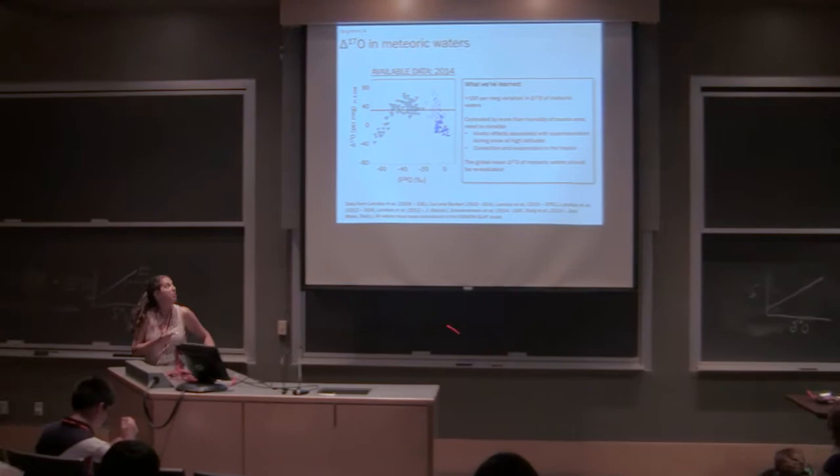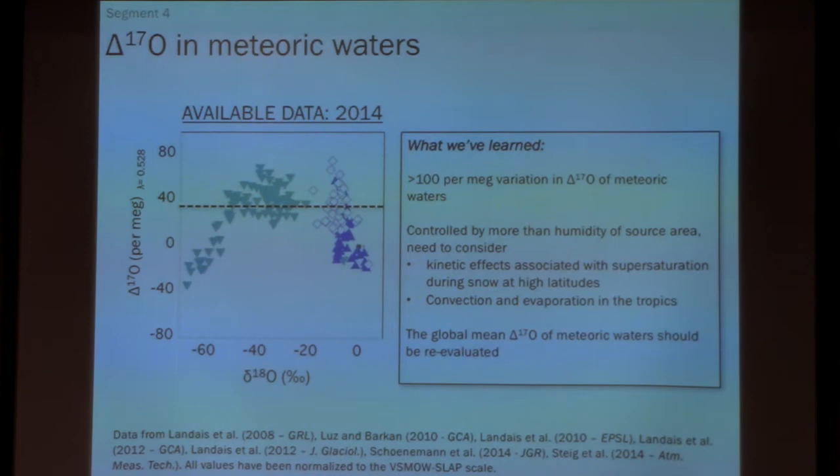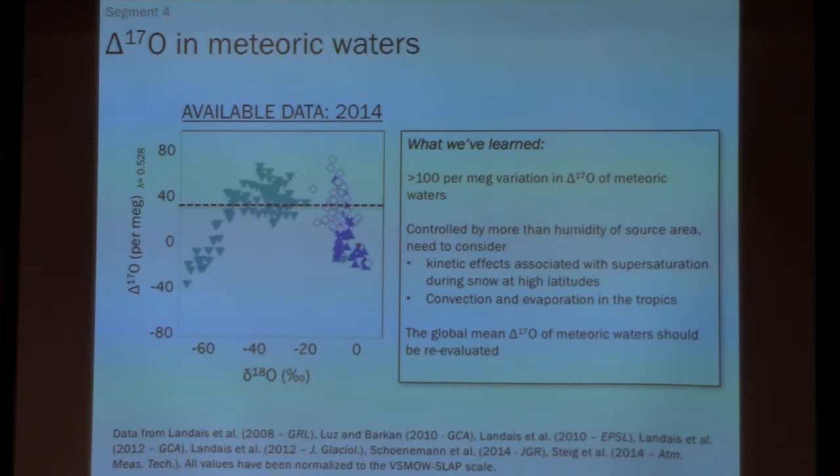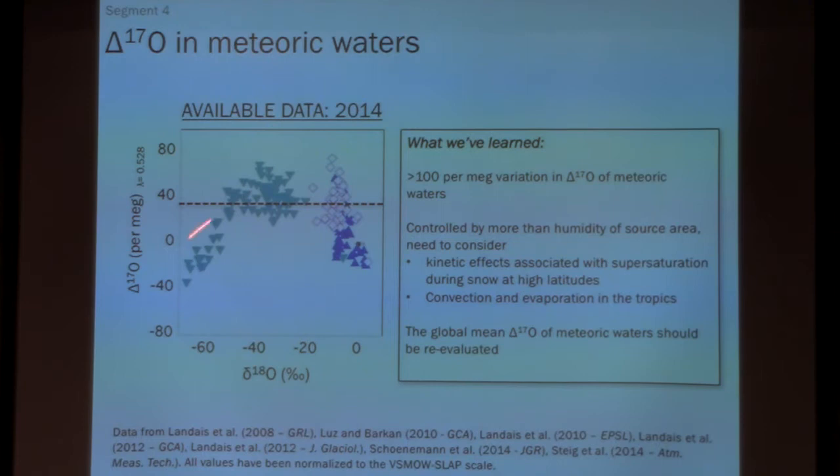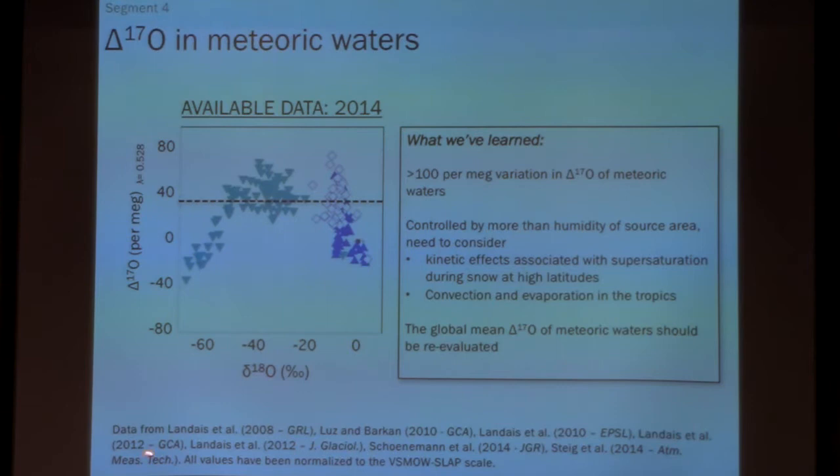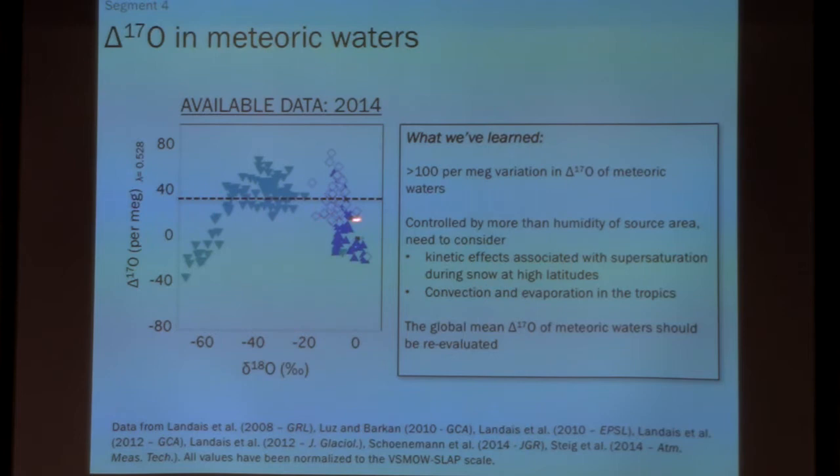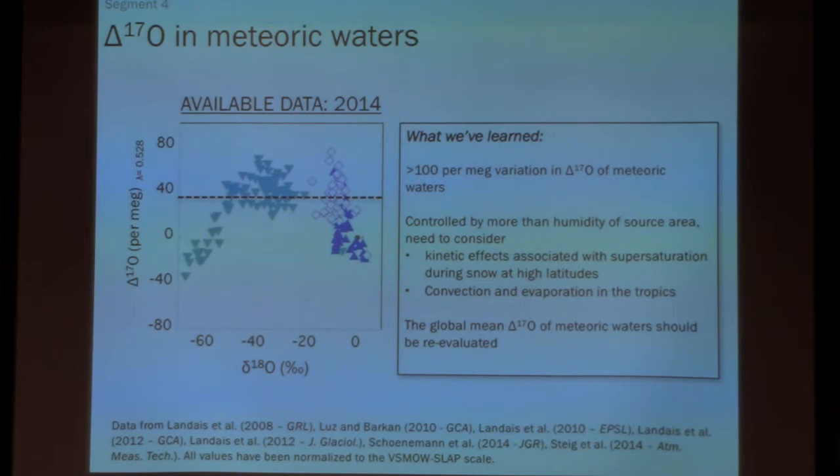Okay, so we know that what we know at this point in 2014 before we started making our measurements is that there's 100 per meg, a lot sort of in this space, there's 0.1 per meg variation in CAP-17O of meteoric water. So if you're using the hydrosphere and the biosphere is probably not constant. There's variation in here. I think from these initial data from 2014 that the meteoric waterline needed to be re-evaluated.